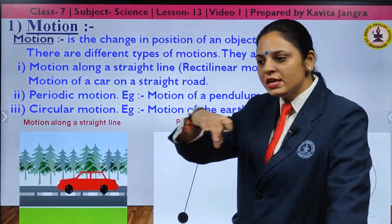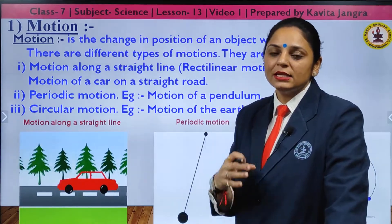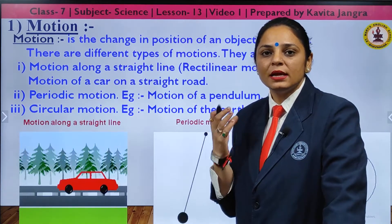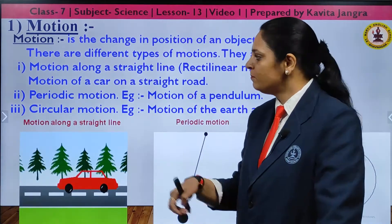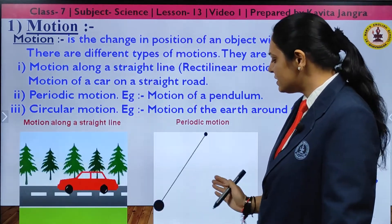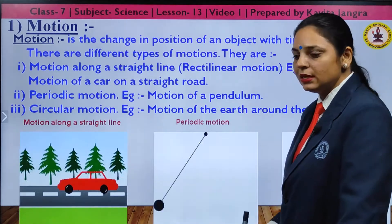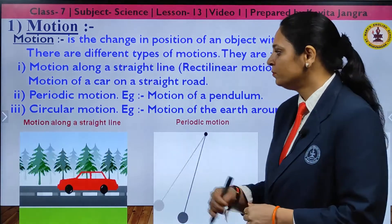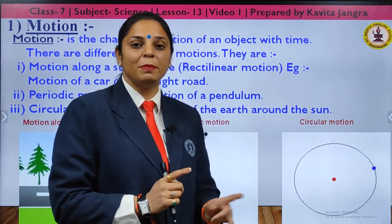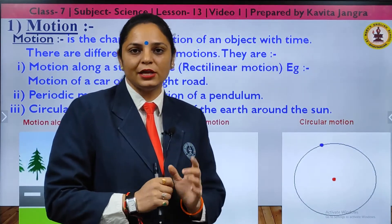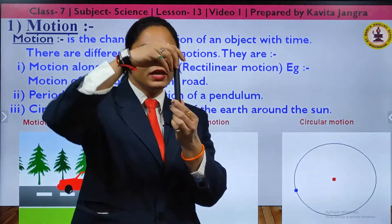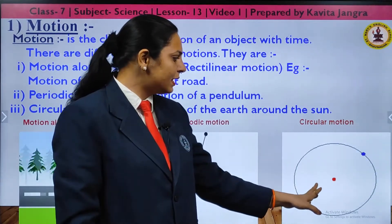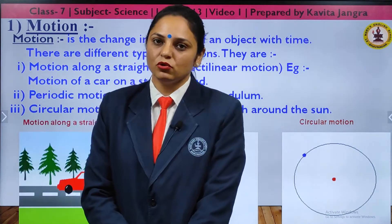There are different types of motion. Rectilinear motion is motion along a straight line — for example, a car moving on a straight track, athletes running in a straight lane, or the march past of soldiers. Periodic motion is the motion of a pendulum, also known as oscillatory motion. Circular motion is when an object moves in a circular path. Rotational motion is when anything moves about its own axis.